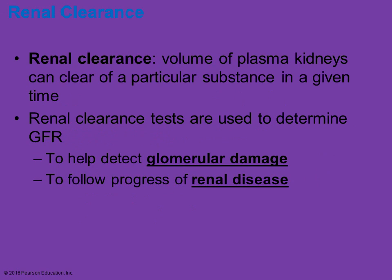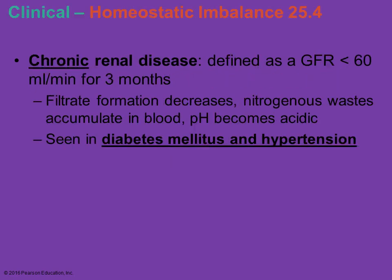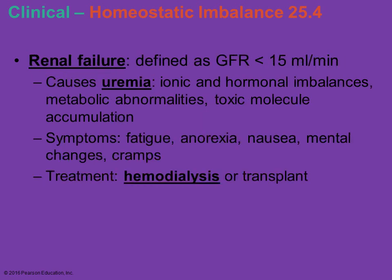If you're looking at renal clearance, you're looking at the volume of plasma that the kidneys can process within a certain amount of time. What would the results indicate? You're trying to see if there is glomerular damage or renal disease. Chronic renal disease is defined as consistently less than 60 milliliters per minute flowing through for three months. If the filtrate amount is decreasing, you're typically going to have nitrogenous waste building up in the blood and the blood pH may be decreasing — becoming too acidic. This is sometimes seen with diabetes mellitus and hypertension. Renal failure is defined when it's less than 15 milliliters per minute.